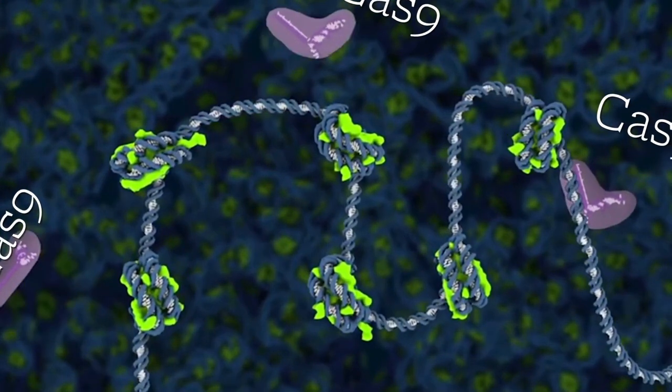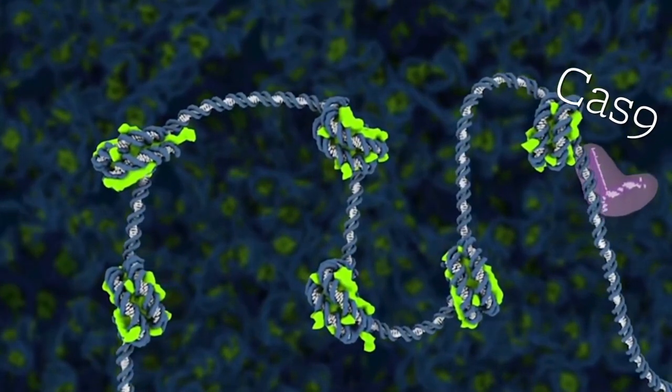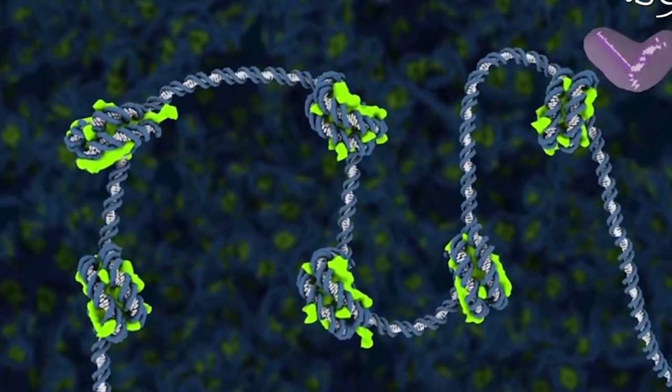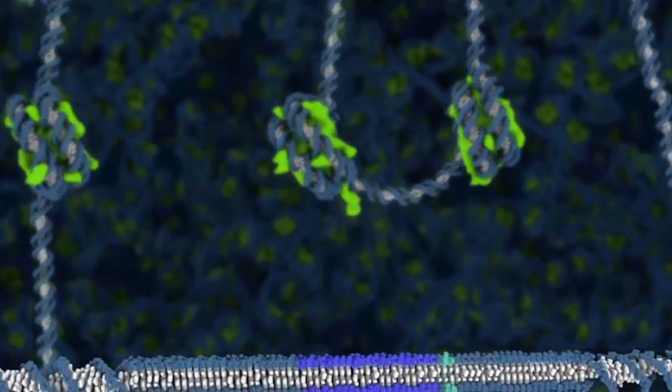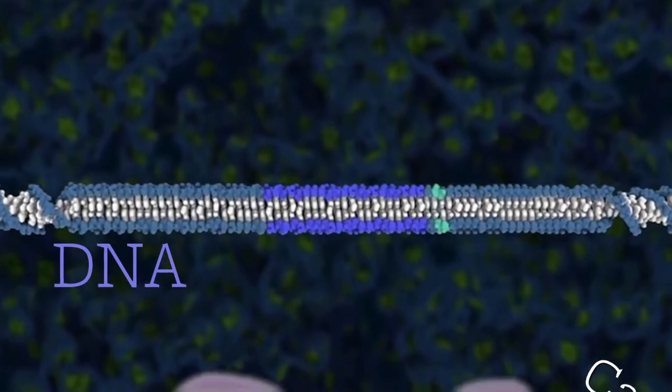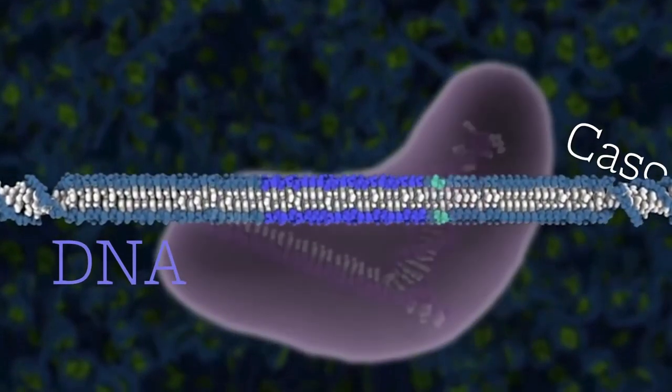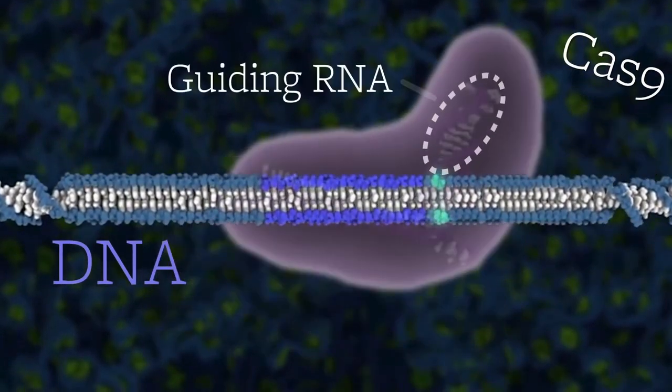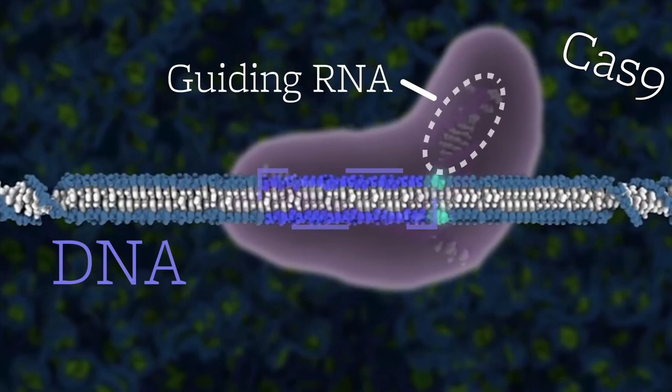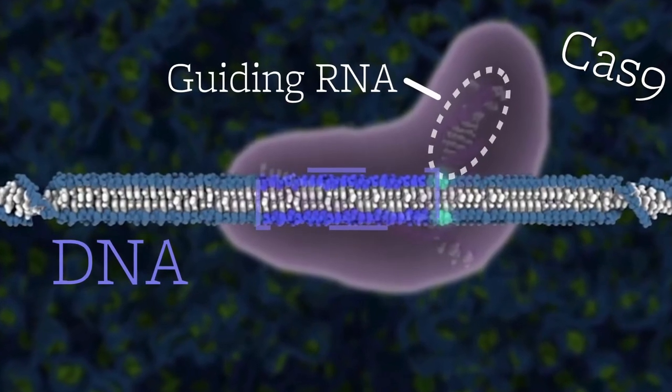and then disable it by cutting or editing the DNA. For Cas9 to find the malfunctioning DNA sequence, scientists attach it to an RNA sequence that matches the DNA sequence they want to edit. Then they inject this RNA-Cas9 combination into the affected cell